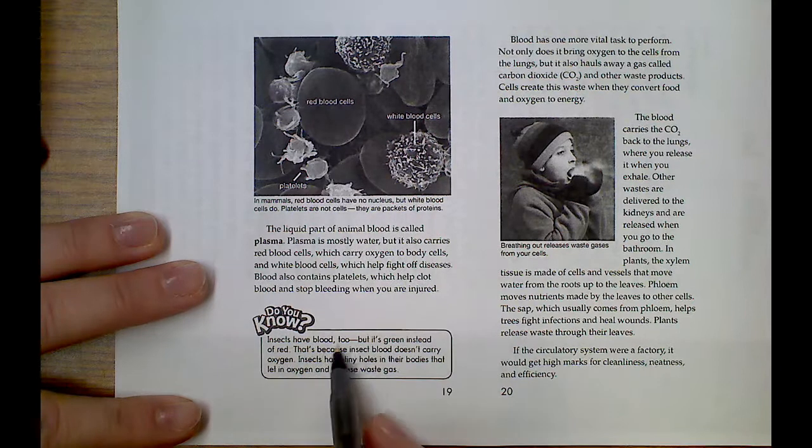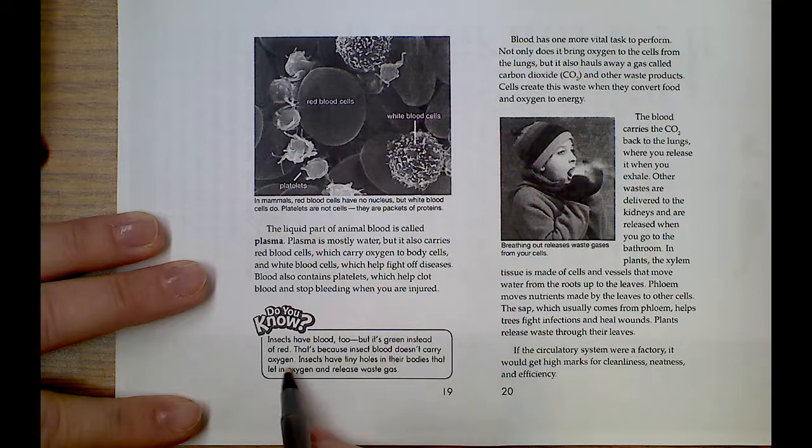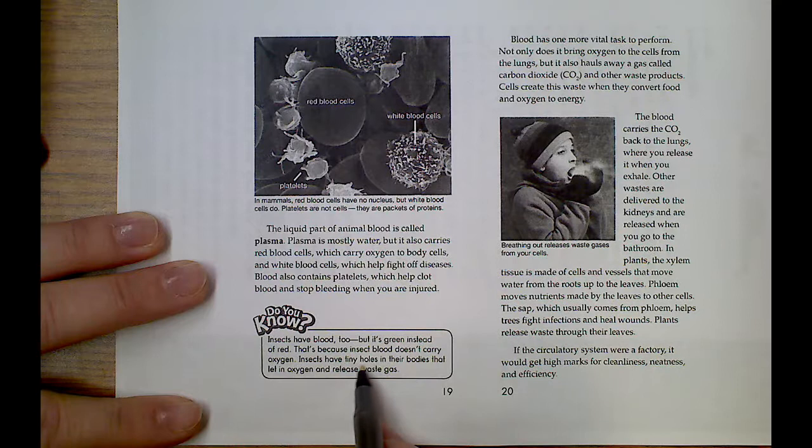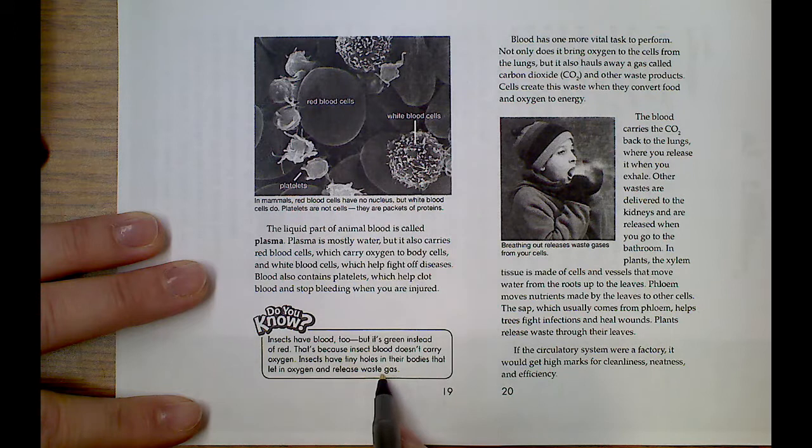Insects have blood too. But it's green instead of red. That's because insects' blood doesn't carry oxygen. Insects have tiny little holes in their bodies that let in oxygen and release waste gas. Fascinating.